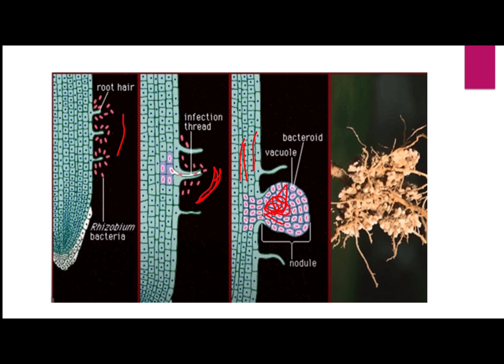The bacteria that enter and divide continuously form a special type of cell called nitrogen-fixing cells, or bacteroids. These cells contain an enzyme called nitrogenase, which requires anaerobic conditions to fix nitrogen — it only works in the absence of oxygen. The actual nitrogen fixation is carried out in those nodules.